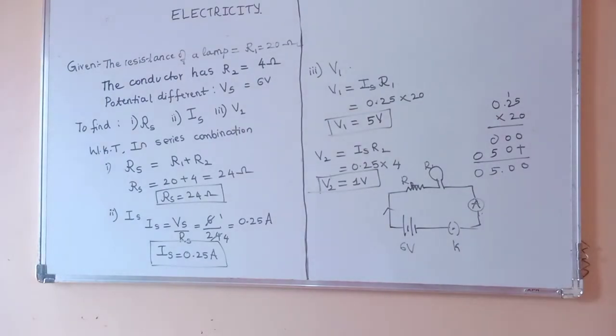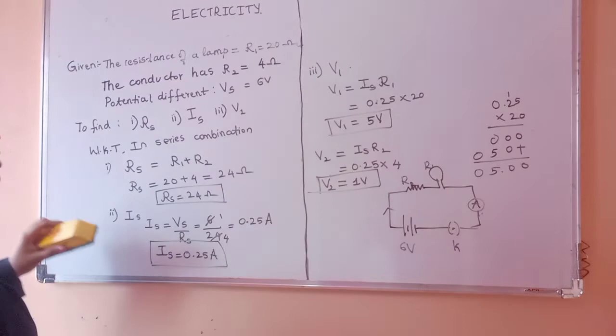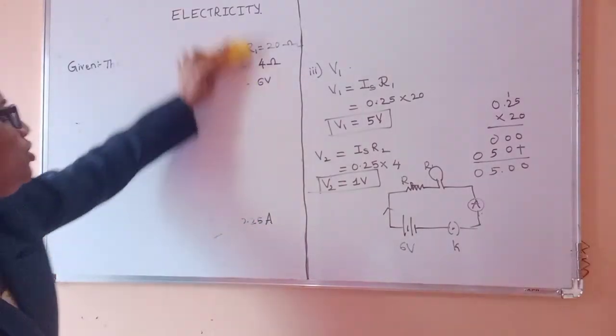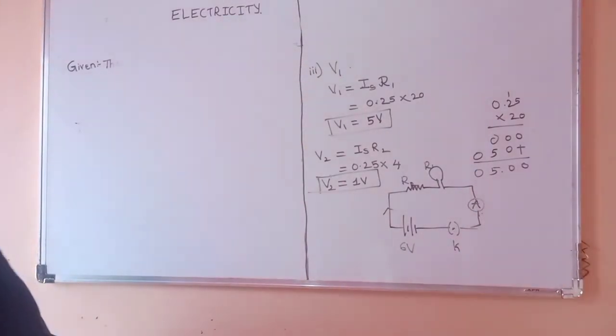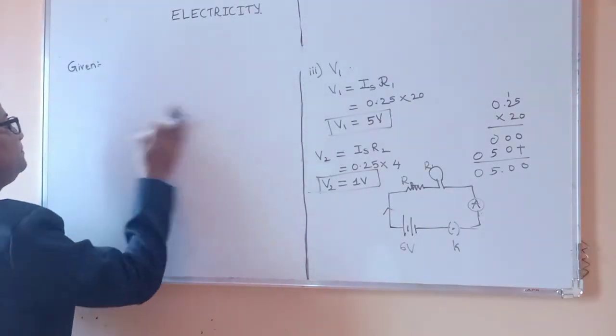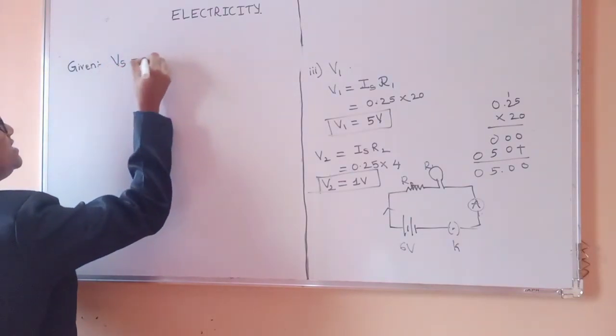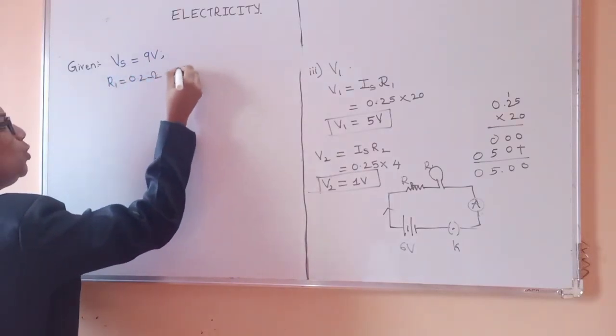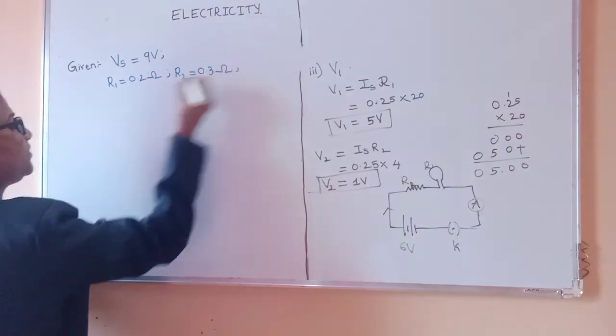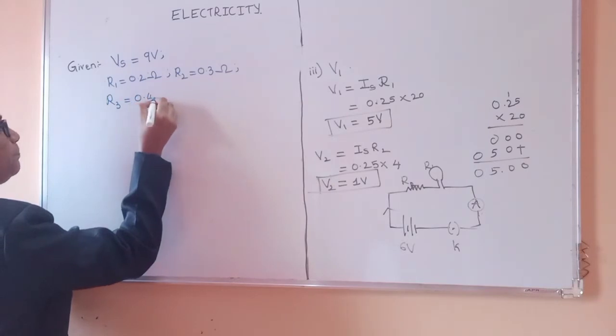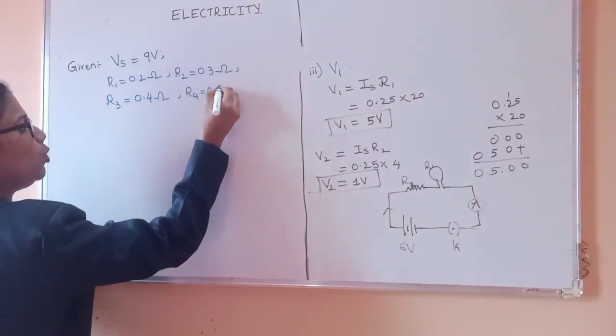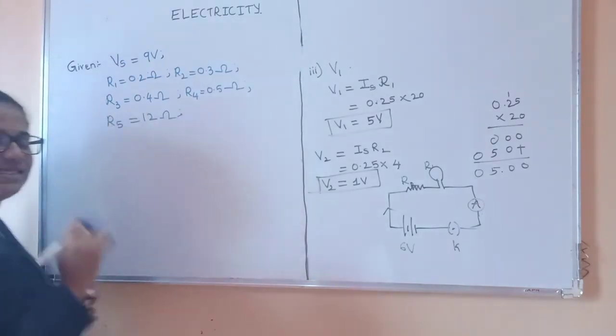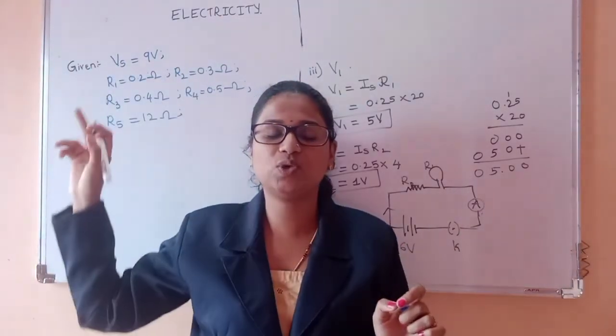Now the next question I selected from the exercise, that is the ninth question. In the ninth question, 9 volt battery is connected. So given here is Vs, it is connected in series. Vs is equal to 9 volt. Then they have R1 as 0.2 ohm, R2 as 0.3 ohm, then R3 as 0.4 ohm, R4 as 0.5 ohm, then R5 as 12 ohm. So the five resistors are connected in series to a 9 volt battery.